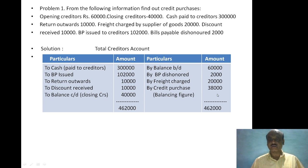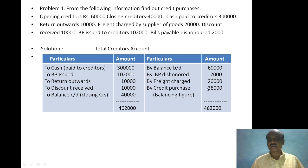This gives us the total creditors account. The creditors account is balanced to find the closing creditors balance. Credit purchases will be the balancing figure on the credit side of the total creditors account.